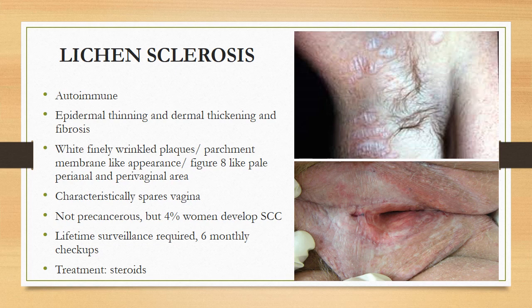Lichen sclerosis characteristically spares the vagina, as opposed to lichen planus. So if you are seeing a lesion that is not going into the vagina but is surrounding all around it, that is most probably lichen sclerosis.